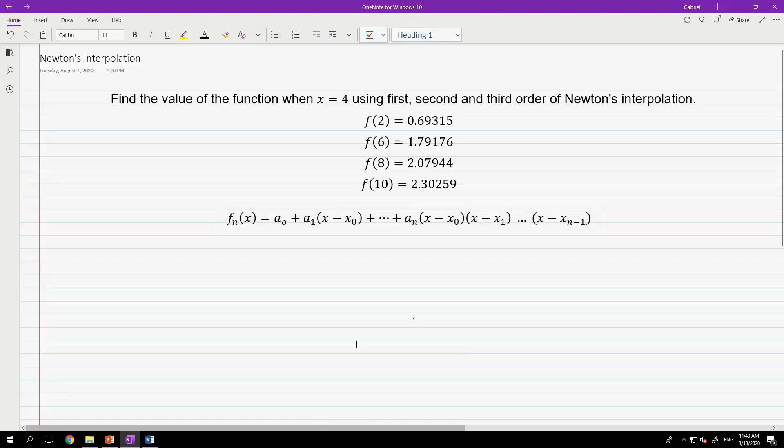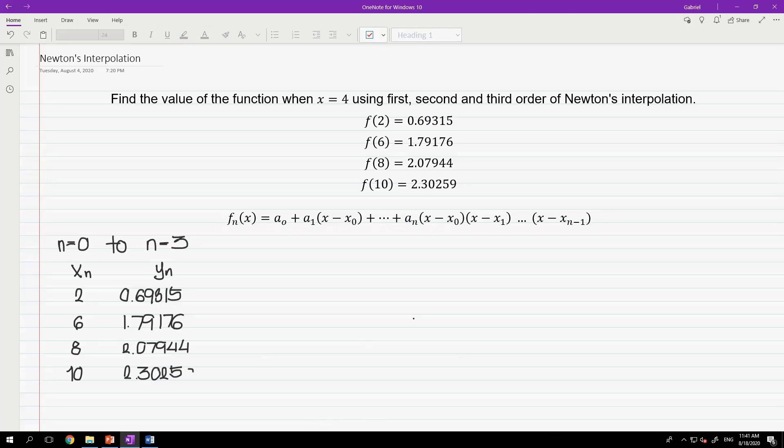To start the solution, remember that our goal is to determine the coefficient of Newton's polynomial. To do that, we have to tabulate the data of nth data point from n equals to 0 to n equals to 3. Where this column is the first degree divide difference, the second degree divide difference, and the third degree divide difference.